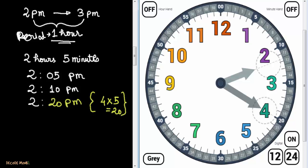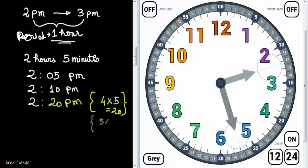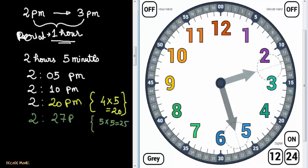Moving the minute hand to between 5 and 6: till 5, that's 5 multiplied by 5 equals 25 minutes. So when the minute hand is at 5, it's 2:25 p.m. If it moves a little further — say 2 small divisions past 5 — that's 25 plus 2, which is 2:27 p.m.